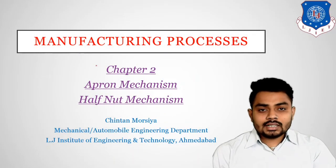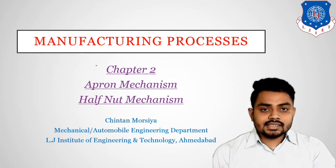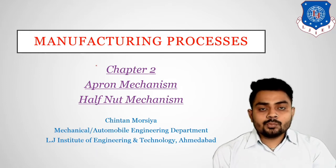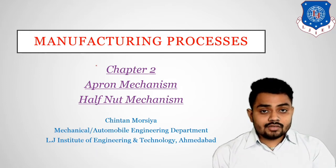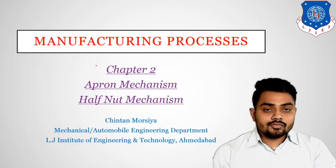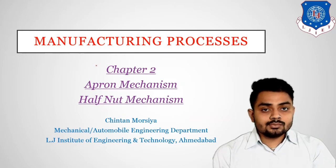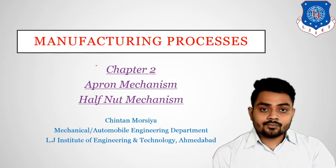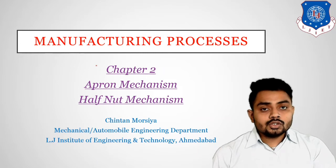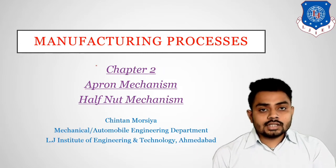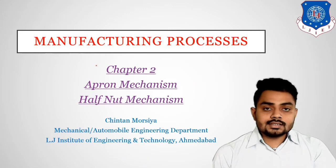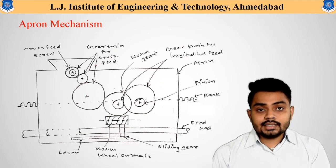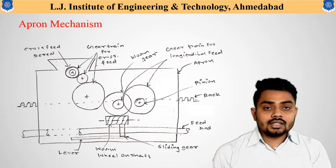Welcome to this lecture in which we will discuss the next major feed mechanism, that is the apron mechanism. In our previous lecture, we discussed the tumbler gear mechanism, which is useful to transfer motion from the spindle end to the lead screw or feed rod. The automated movement from the lead screw or feed rod toward the carriage or cross slide is obtained using the apron mechanism.